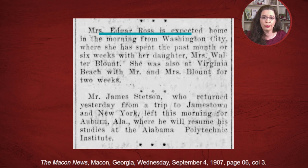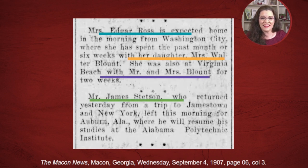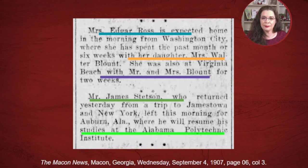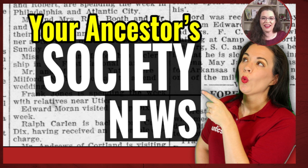She has been visiting her daughter, Mrs. Walter Blount. In the second article, Mr. James Stetson returned from a trip to Jamestown and New York, and he left for Auburn, Alabama. And it tells us where he is studying, at Alabama Polytechnic Institute. If you didn't know where James moved in 1907, this article gives you some clues. Plus, if he happened to marry someone from New York, although he lived in Georgia, you might have a clue that he met this woman during that trip. To learn how to research society news using keywords related to such topics, check out my video, which is linked in the description box below.